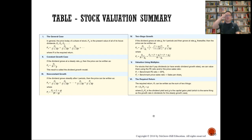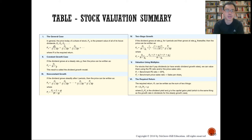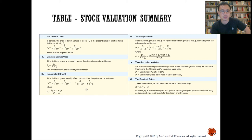In summary, stock valuation approaches include: the general case of discounting each period's dividend payments and summing present values; the constant growth model where P0 equals D1 divided by (R−G), also written as D0 times (1+G) divided by (R−G); non-constant or supernormal growth using a multi-stage model; and using the expected market price at period T.